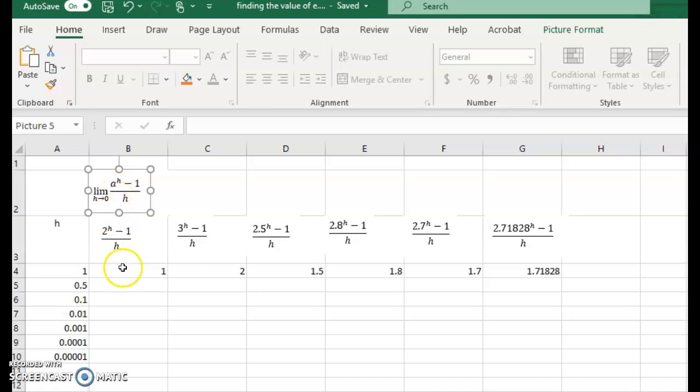So here's a obviously and what I've done is I've set up a spreadsheet and you can see here that the values of a in this one is 2, here it's 3, 2.5, 2.8, 2.7 and then 2.71828. And we'll get to the reasoning behind why we've chosen particularly that value and in a little while it will become a bit more apparent. But we've chosen values of a somewhere between 2 and 3.